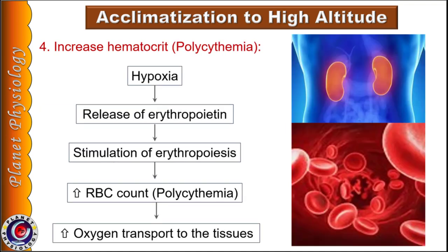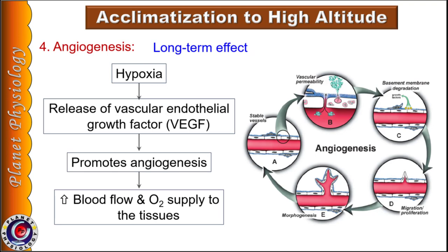The next adaptive mechanism is increase in hematocrit value. Hypoxia stimulates release of erythropoietin from kidneys, which accelerates formation of RBCs leading to polycythemia, increasing the amount of oxygen transported to tissues. Note that it takes about one week to increase RBC count after exposure to hypoxia, as erythropoietin acts on the pronormoblast stage. If the person continues to stay at high altitudes for years, tissues start releasing vascular endothelial growth factor, which promotes angiogenesis — formation of new blood vessels — increasing blood flow and oxygen supply. Angiogenesis is part of long-term adaptation, especially pronounced in animals born and bred at high altitudes.